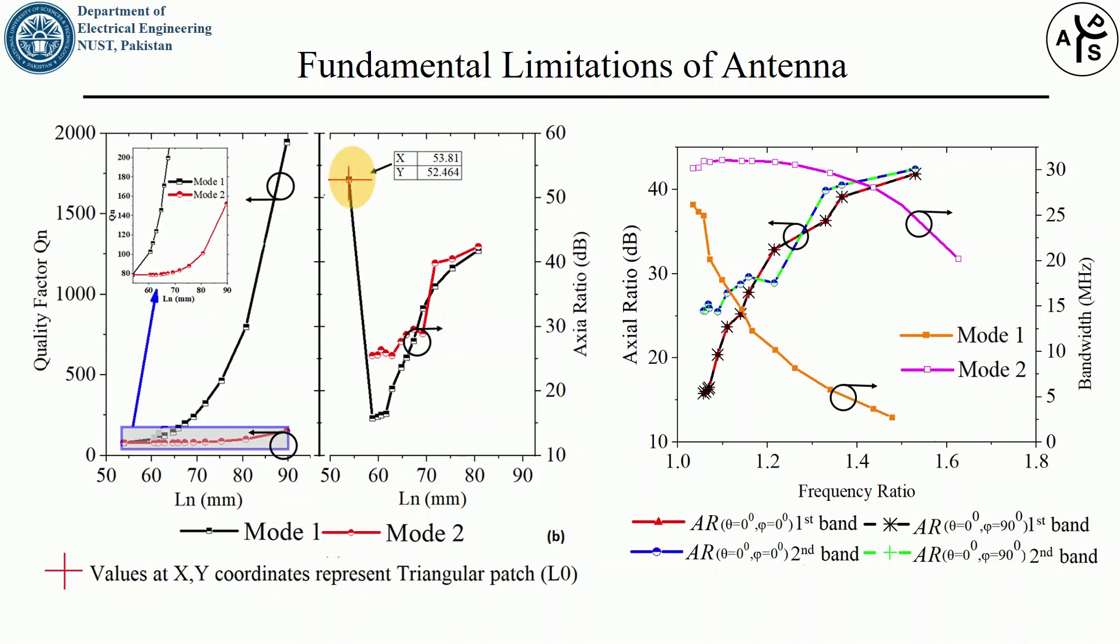This is the axial ratio of the degenerate modes of triangular patch antenna which you can see is very high. So when the slot is incorporated to separate the resonant frequencies, axial ratio of both modes significantly reduces. But you can also see here that axial ratio of antenna in both bands is greater than 15 dB at the frequency ratio of 1.057. So antenna offers high polarization purity in both bands at lowest frequency ratio. Now axial ratio increases with the increase in the size of the slot and frequency ratio.